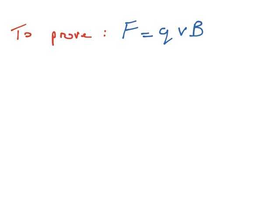In this proof we are going to look at the F equals QVB formula. The letters inside of the formula, the F stands for the force that a current carrying wire would experience inside of a magnetic field.